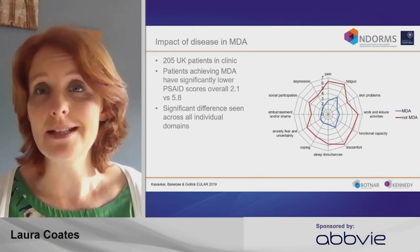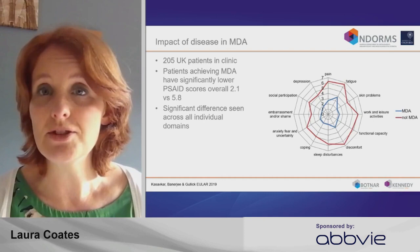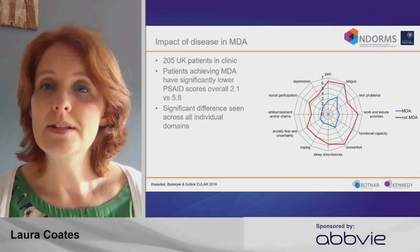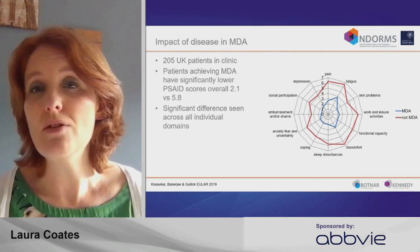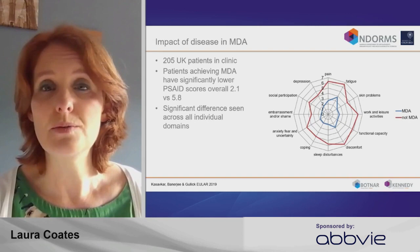It's clear that if patients achieve minimal disease activity — if their arthritis, enthesitis, and skin disease are well controlled using the MDA criteria — that translates to better quality of life. This figure shows the PSAID questionnaire, the impact of disease questionnaire, which is really useful in clinical practice, from a clinical study in the UK. Those in minimal disease activity in blue have low scores across all 12 different questions within the PSAID, whereas those not achieving MDA have much higher scores across the board.